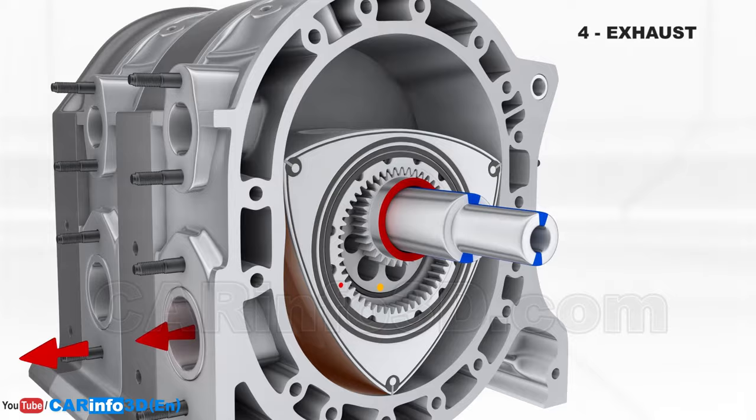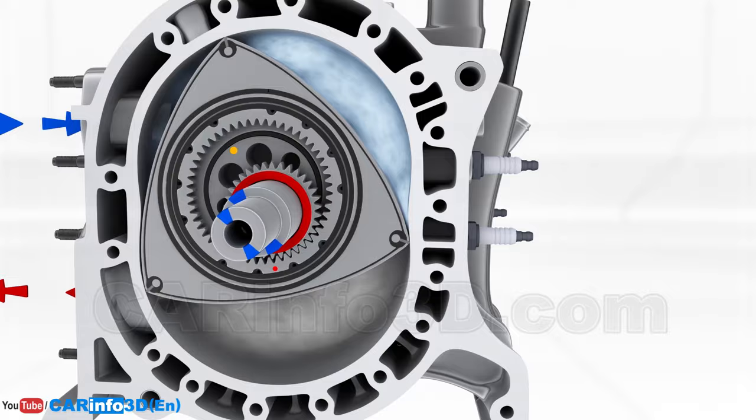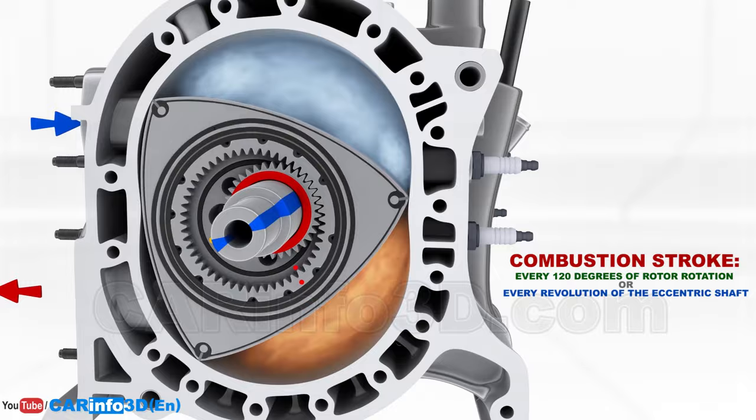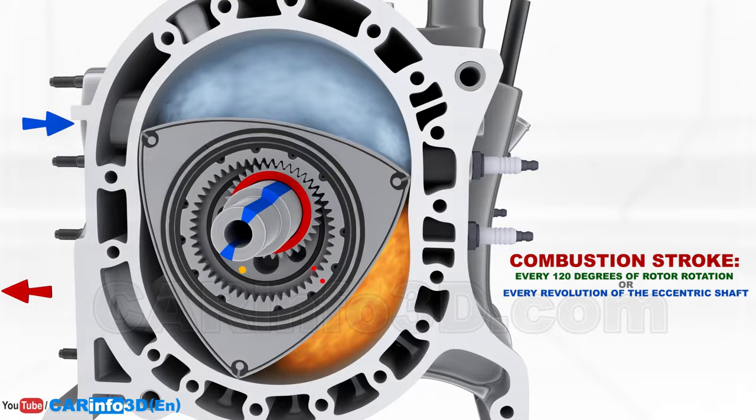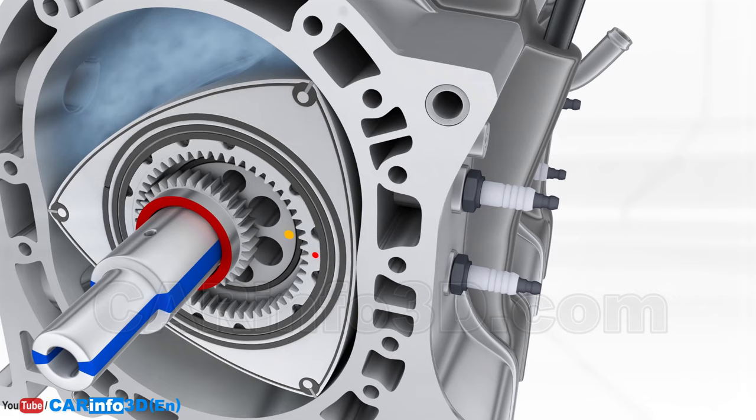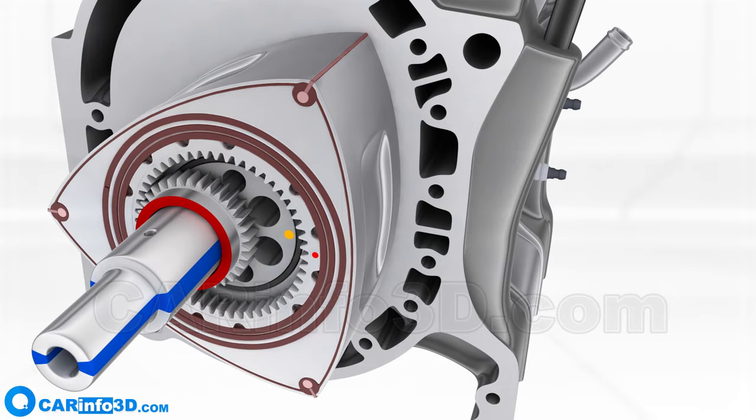Please keep in mind that a stroke happens on each of the rotor's three sides, which means that combustion occurs every 120 degrees of rotor rotation, or one revolution of the eccentric shaft, rather than every 360 degrees. The chambers are isolated by numerous rotor seals, the most critical of which are apex seals.